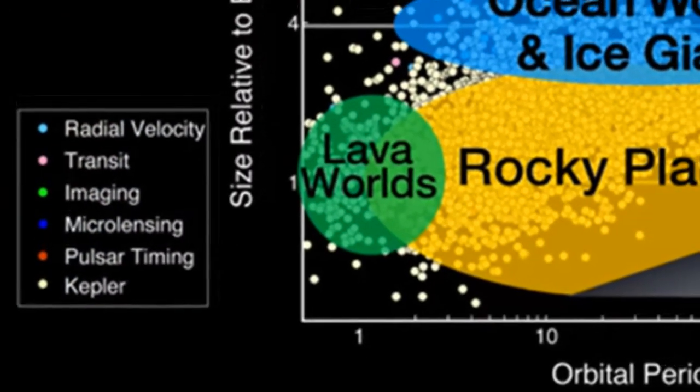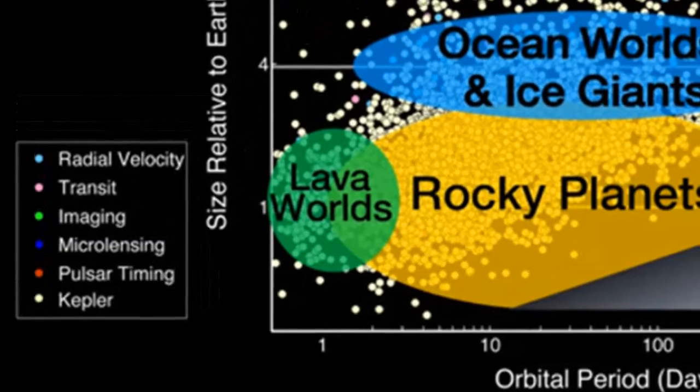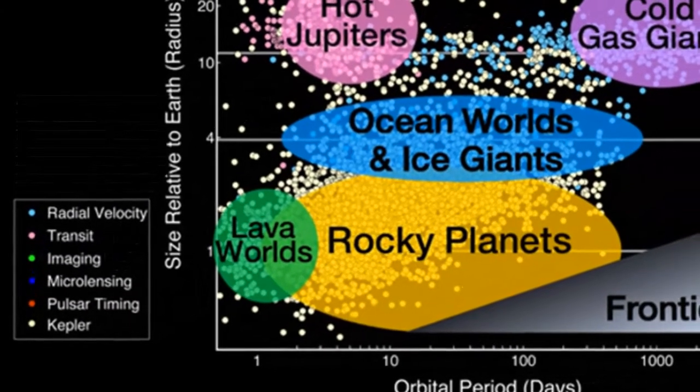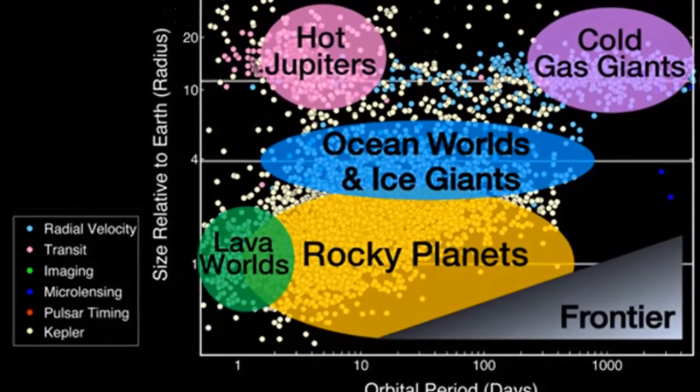Rocks: Principally silicate minerals and metallic iron, which have melting points that exceed 700 degrees Celsius.